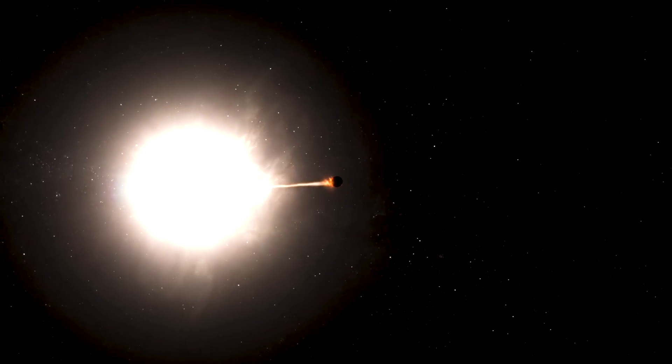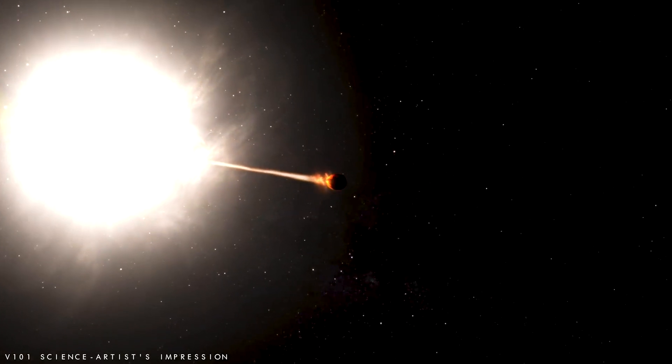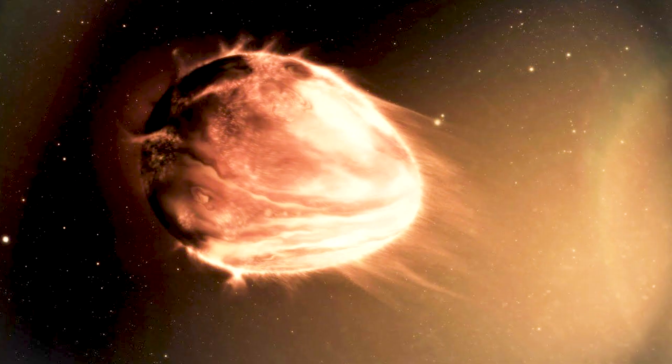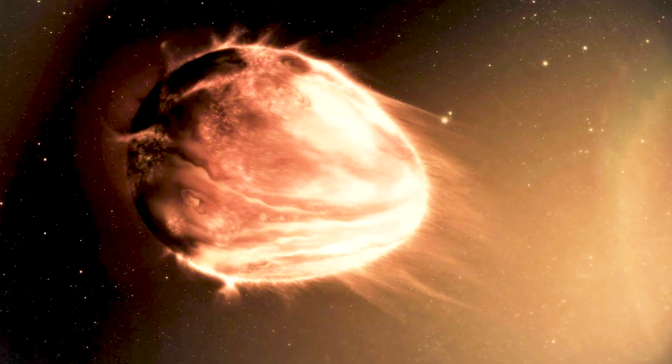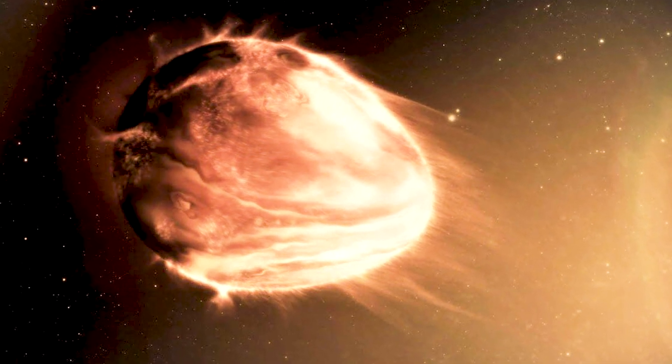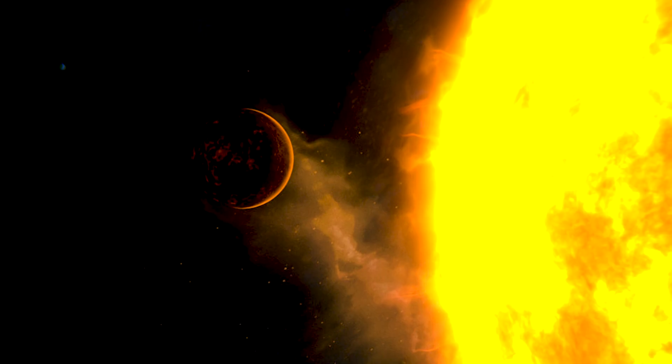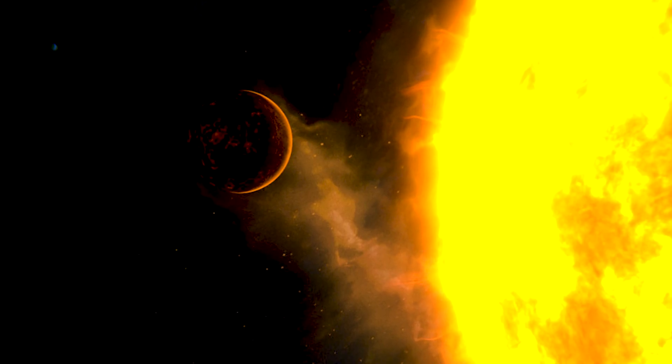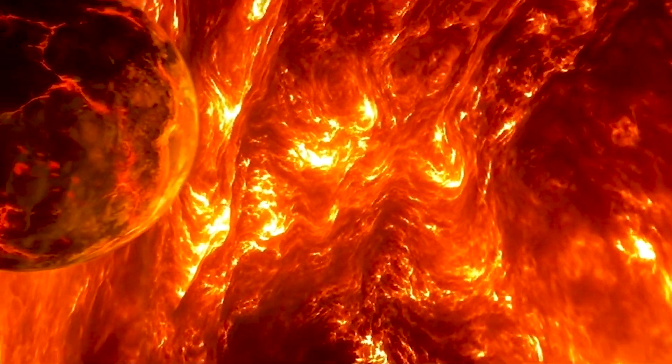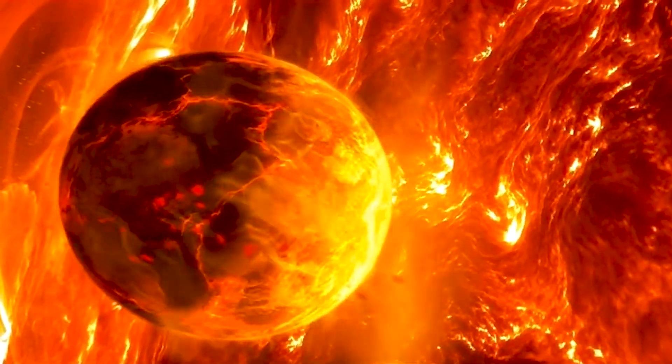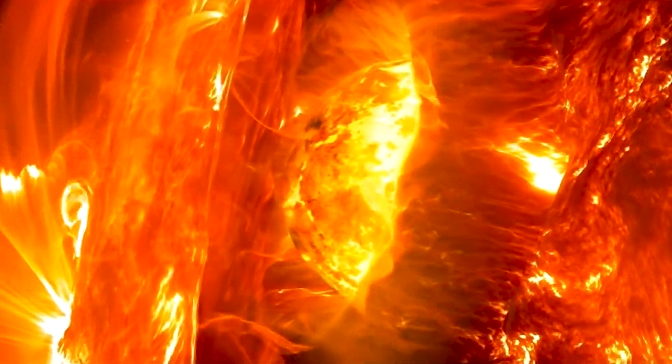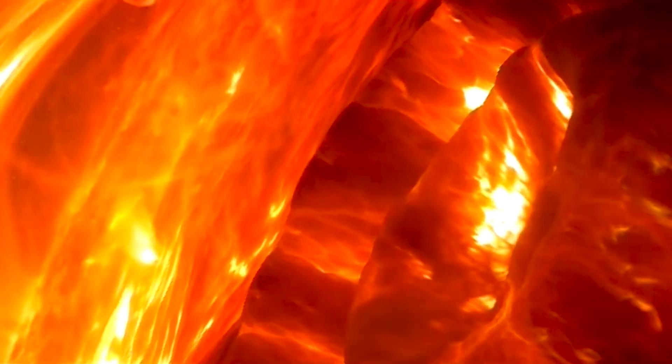WASP-12b is slowly being torn apart and consumed by its parent star. Due to extreme tidal forces creating a stretched comet-like tail behind it, this doomed planet completes one orbit around its star in just 26 hours. A death spiral that will end in about 10 million years with WASP-12b completely falling into its parent star.